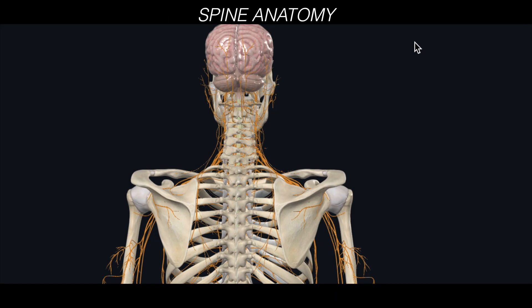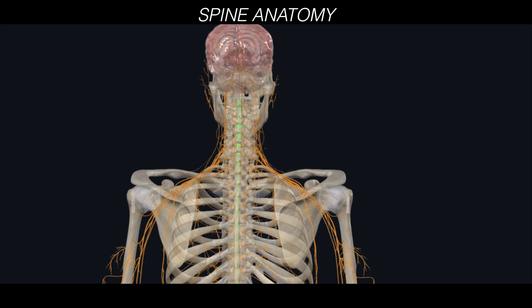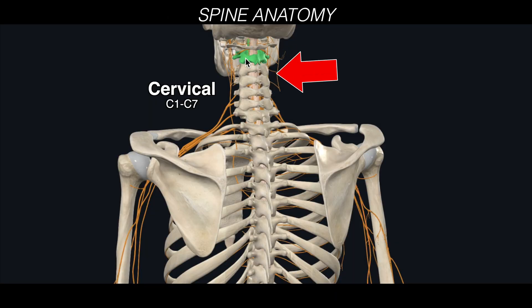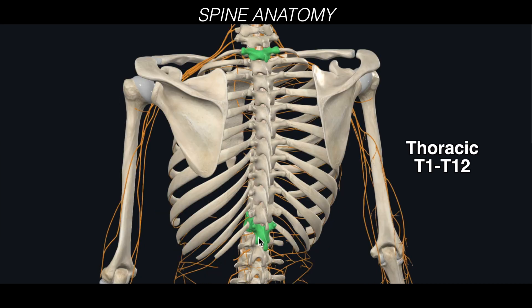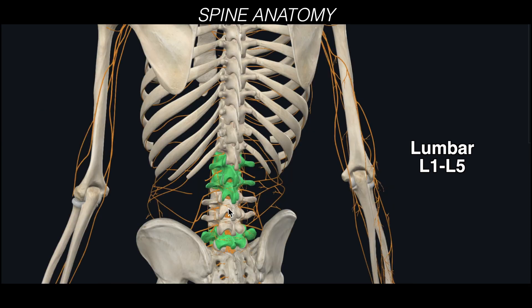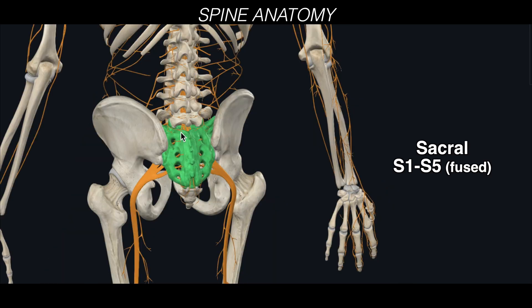Let's start with a quick anatomy review. The spine is split into four different parts: the C-spine or cervical spine, the T-spine or thoracic spine, the L-spine or lumbar spine, and the S-spine or the sacral spine.